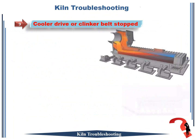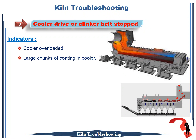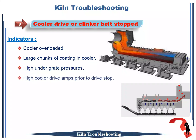Rotary kiln troubleshooting number 9: cooler drive or clinker belt stopped. The important indicators from this case: 1. cooler overloaded; 2. large chunks of coating in cooler; 3. high under-grate pressures; 4. high cooler drive amperes prior to drive stop; 5. clinker transfer chutes plugged.